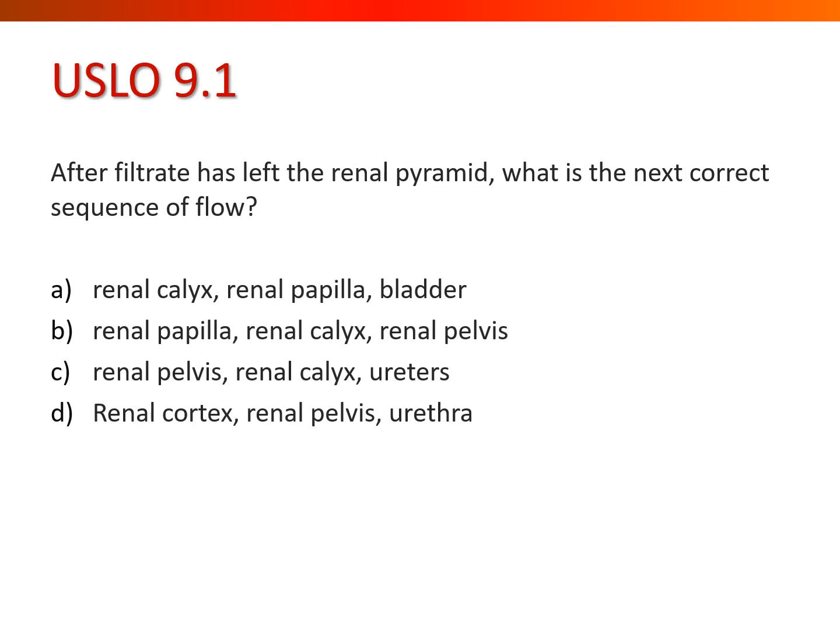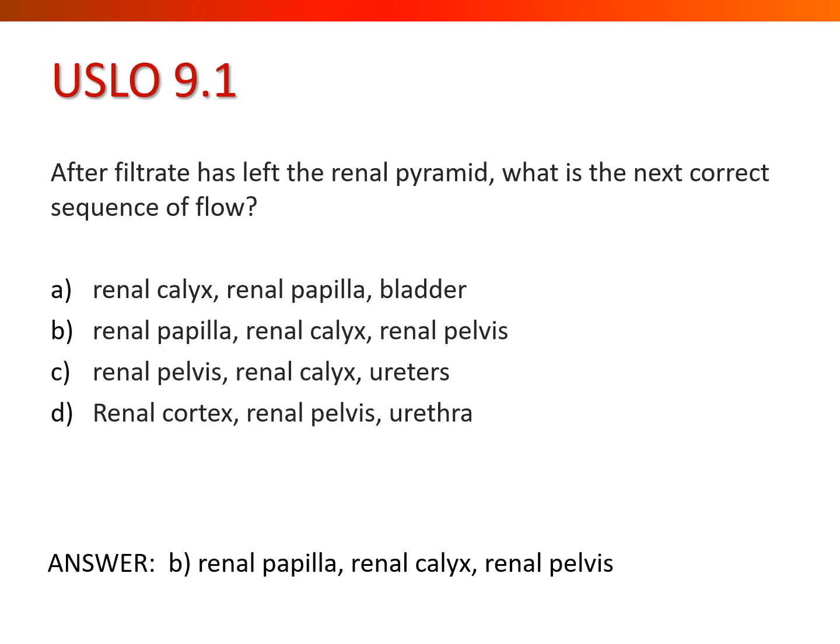After filtrate has left the renal pyramid, what's the next correct sequence of flow? The key word is renal papilla — letter B. If filtrate is in the pyramid, it next filters through the papilla because all collecting ducts merge to create the renal papilla, then drains into a minor calyx, then a major calyx, and ultimately into the renal pelvis.